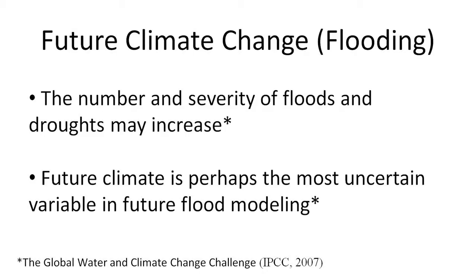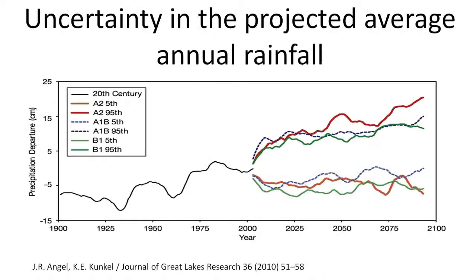In addition to the past uncertainty in data, there is future uncertainty. According to the IPCC, the future climate is perhaps the most uncertain variable in future flood modeling. Jim Angel from the State Water Survey created a chart that analyzes the uncertainty, which is huge. The future precipitation can be anywhere, and the extreme precipitation, which we're focusing on, can have even larger uncertainty.